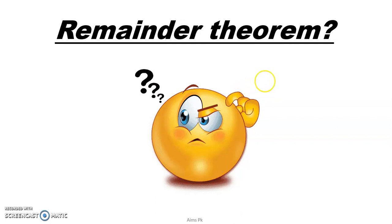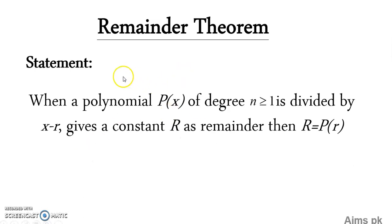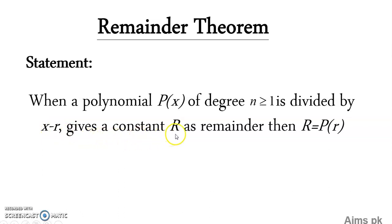Now, what does the statement of the Remainder Theorem say? Here is the statement: when a polynomial P(x) of degree n greater than or equal to 1 is divided by a linear polynomial (x minus r), it gives a constant R as remainder, then R equals P(r). This R represents our remainder.